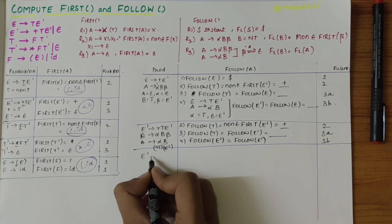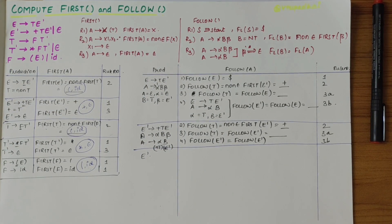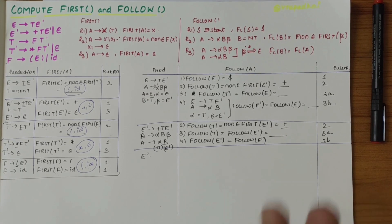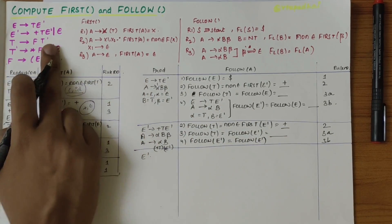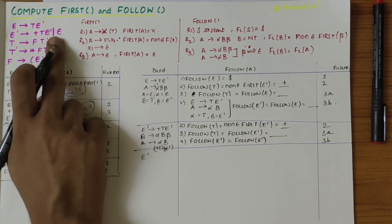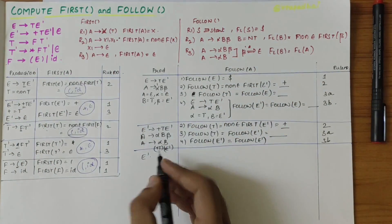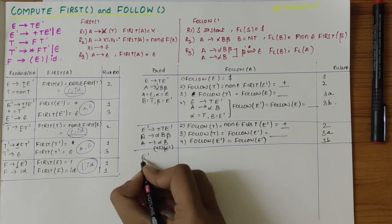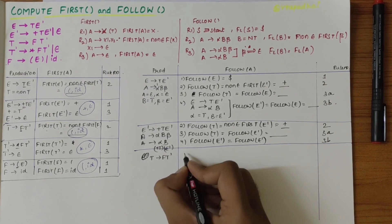When E' derives epsilon, we need not consider it because there is no non-terminal present — you need at least one non-terminal to compute FOLLOW, so we just skip epsilon productions. Moving on to the next production: T derives FT'.